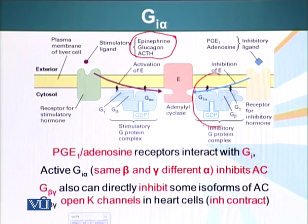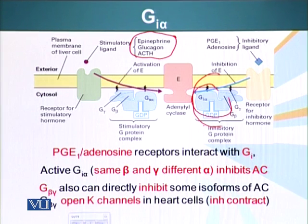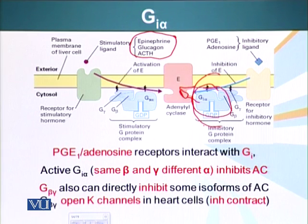These receptors, once they bind their ligand, activate the GI protein. Once activated, the alpha subunit dissociates from beta and gamma and interacts with adenyl cyclase, inhibiting it. So adenyl cyclase, if it was making cyclic AMP molecules, will now stop making cyclic AMP molecules.